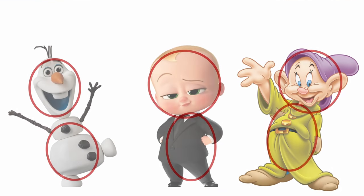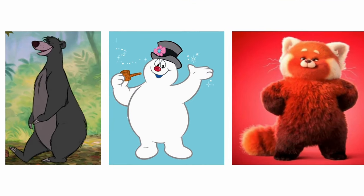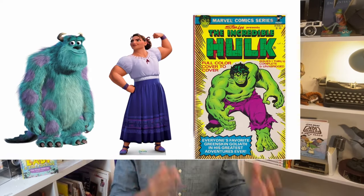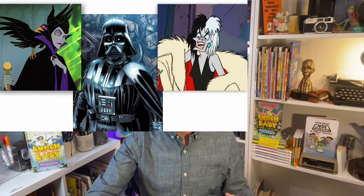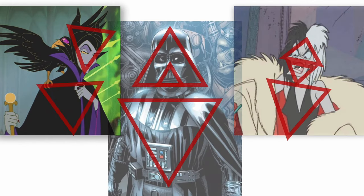Take, for instance, this trio. We have Olaf, Boss Baby, and Dopey. When we break them down to their very core, they're made up of a lot of circular shapes. Would you not want to just go up to them and give them a great big hug and know that they are going to protect you and care for you? And now take these three characters who are also very big and looming. We have Sully, we have Isabel, the Hulk. And when you break them down to their core shapes, we see a number of rectangles and squares — they're very sturdy and very strong. Here we have a cast of villains, and let's take a moment to analyze what shapes we see within them. We see a lot of triangles.